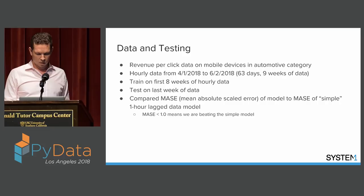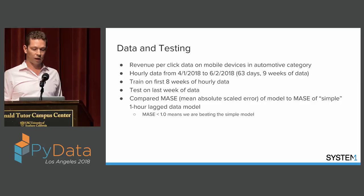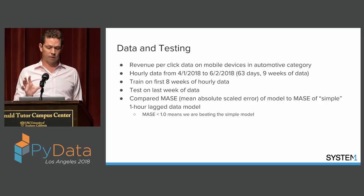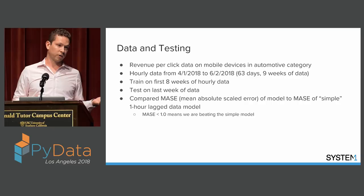We looked at revenue per click data on mobile devices in an automotive category — hourly data for nine weeks, 63 days. We trained on the first eight weeks and tested on the last week as the out-of-sample. We compared the MACE of the model to a simple model baseline: it turns out a really good prediction for what happens next hour is what happened last hour, so we wanted to beat that. We're aiming for a MACE of less than 1.0.